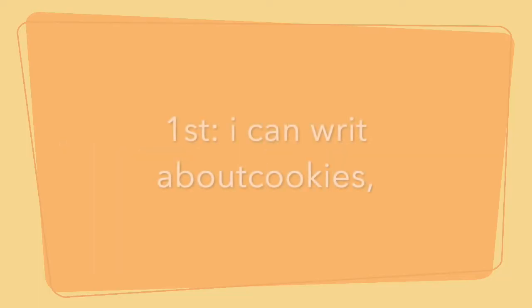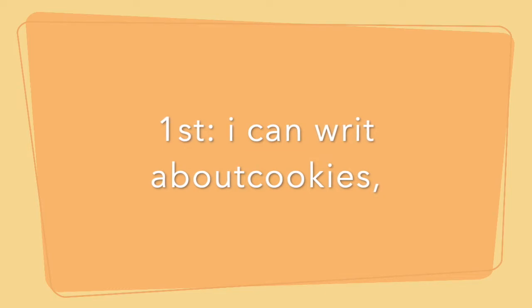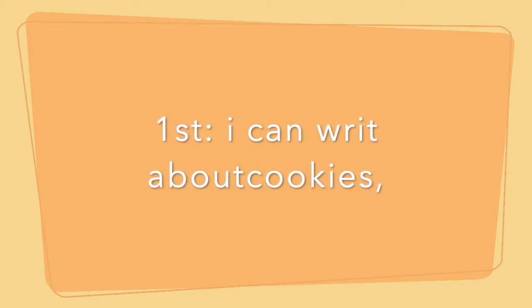Now first grade, you're also going to write that sentence, but I'm going to put up your prompt here in just a second and you're going to pause it so you can write it down. But the sentence I'm giving you is not correct. What you need to do is correct the sentence by putting proper capitalization, punctuation, and spelling. So first grade, here is your prompt: I can write about cookies. This sentence is not correct, so correct the sentence.